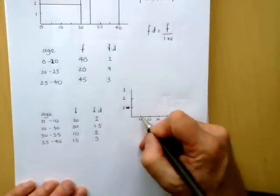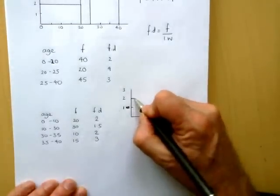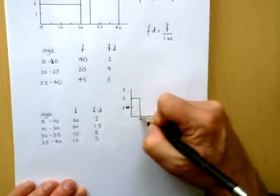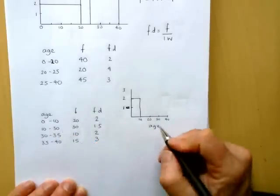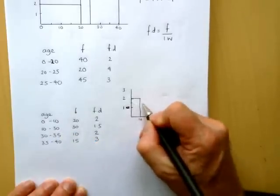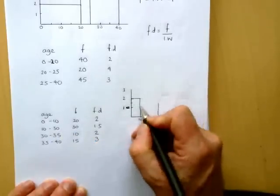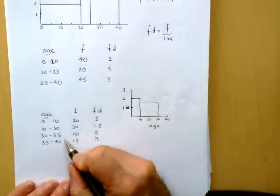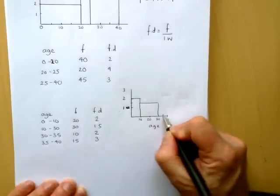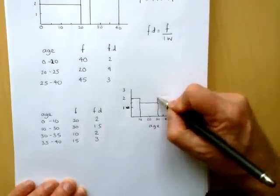So 0 to 10 then has a frequency density of 2. 10 to 30 is a frequency density of 1.5. Put that in there. 30 to 35 is a frequency density of 2 again.